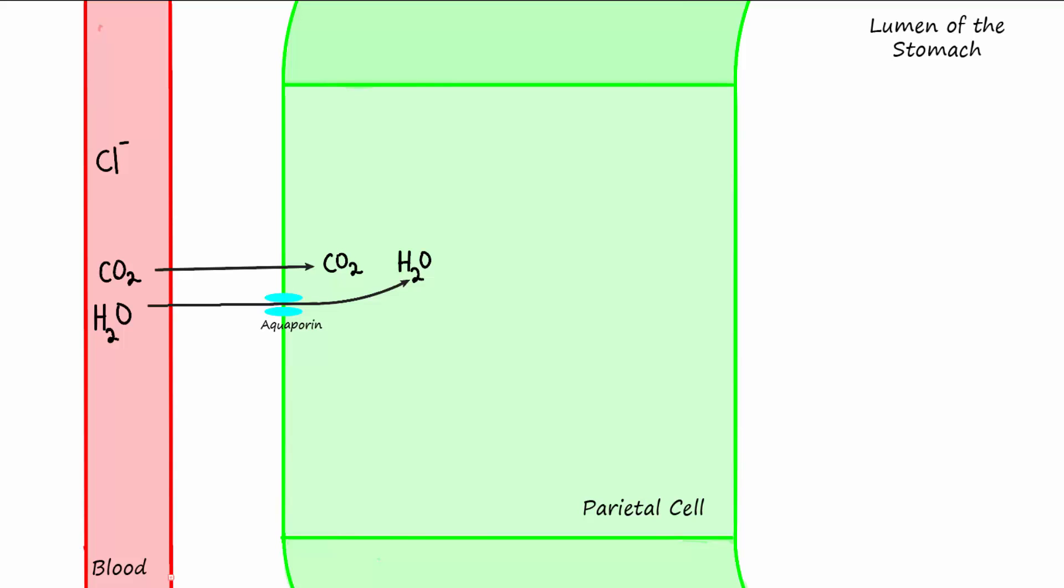Once inside the cell, carbon dioxide and water are combined using our old familiar friend, the enzyme carbonic anhydrase. This enzyme makes carbonic acid, which then dissociates into bicarbonate ions and hydrogen ions.